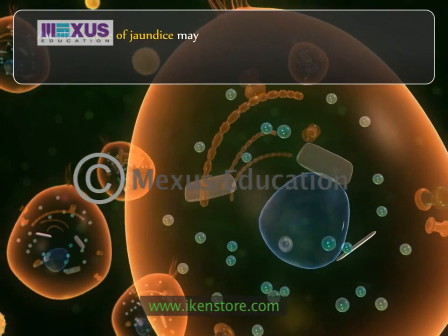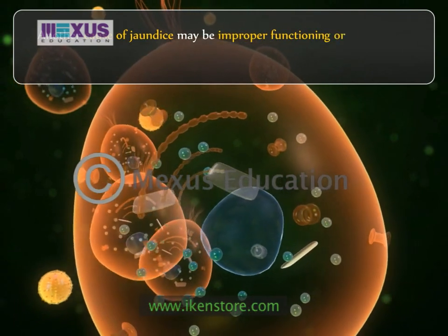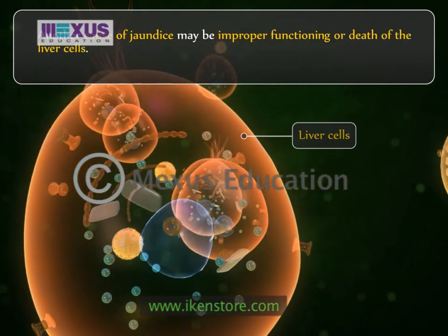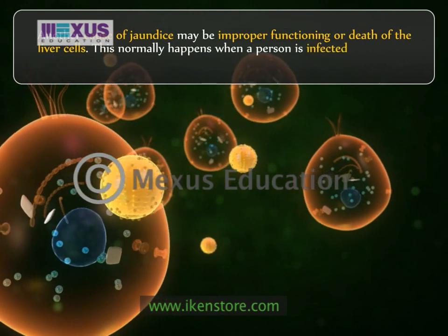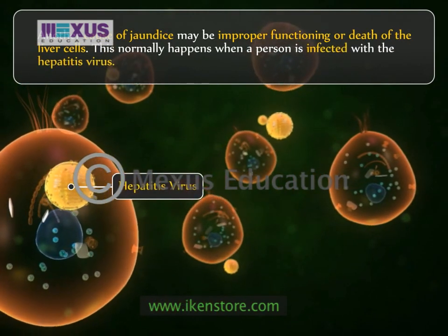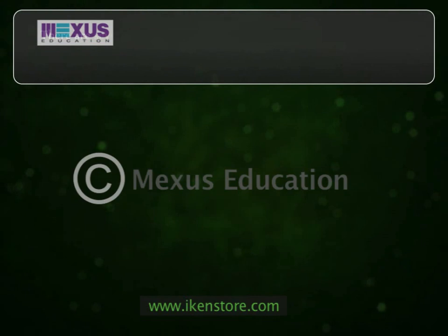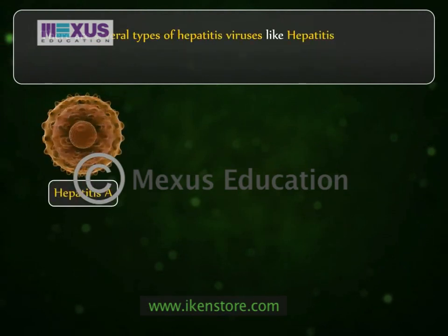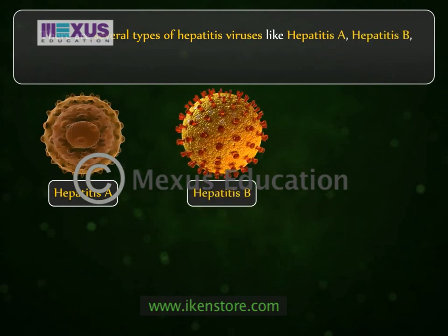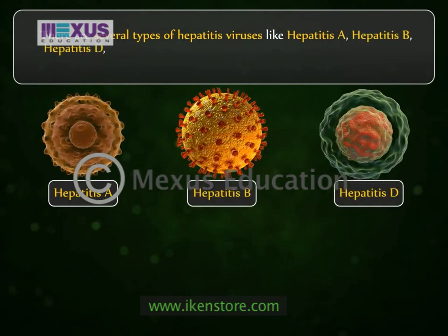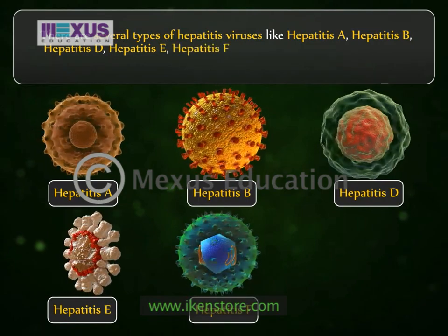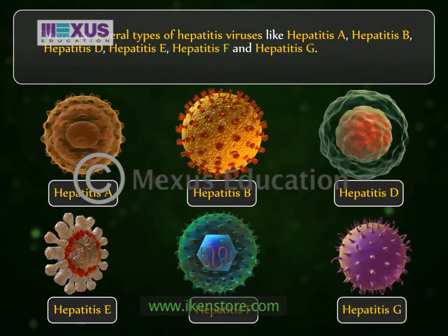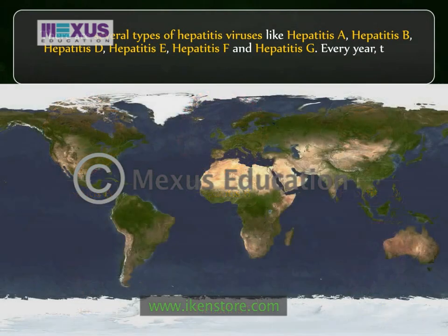Another cause of jaundice may be improper functioning or death of the liver cells. There are several types of hepatitis viruses: hepatitis A, hepatitis B, hepatitis D, hepatitis E, hepatitis F, and hepatitis G.